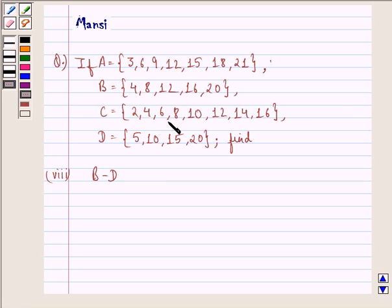C equals the set {2, 4, 6, 8, 10, 12, 14, 16}, and D equals the set {5, 10, 15, 20}, then find the 8th part that is B minus D.